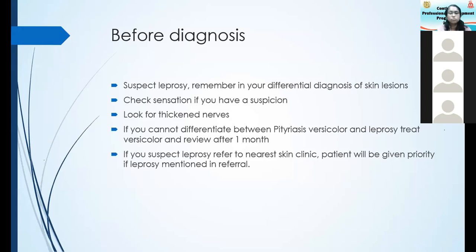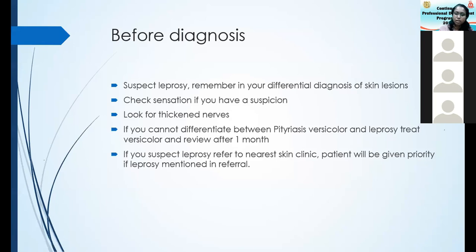Once we come to a somewhat normal situation after COVID, we may see a surge, and you may help us by suspecting and referring. A mother brought her 23-year-old son who had a lesion at the back of his elbow — he said he didn't feel anything there, and she immediately recognized leprosy. She saw this on Friday and by the next Tuesday the boy was on treatment. This is the level of suspicion that all of us should keep.